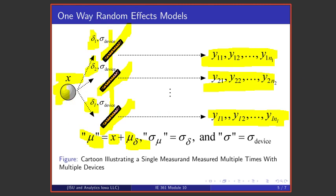The σ_μ is something that describes how variable are these biases. So the σ_μ is a σ for deltas. And the σ for the general one-way random effects model is this quantity that measures how variable are the measurements from any one of these devices.